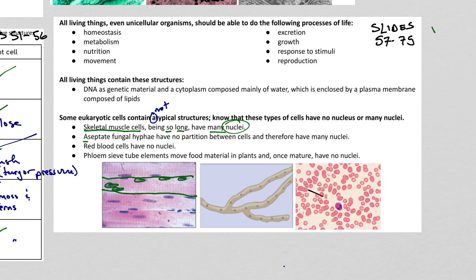Aseptate fungal hyphae — 'aseptate' meaning no septum or divider. A septum is a divider, like the septum in your nose dividing right and left nostril, or the septum in your heart. A hyphae is kind of like a fungus root — not really roots, but a similar function. Aseptate fungal hyphae have no dividers or partitions between their cells, so they appear to have lots of nuclei. We only have a drawing because fungal cells have a cell wall made of chitin, so we can't see the nucleus inside.